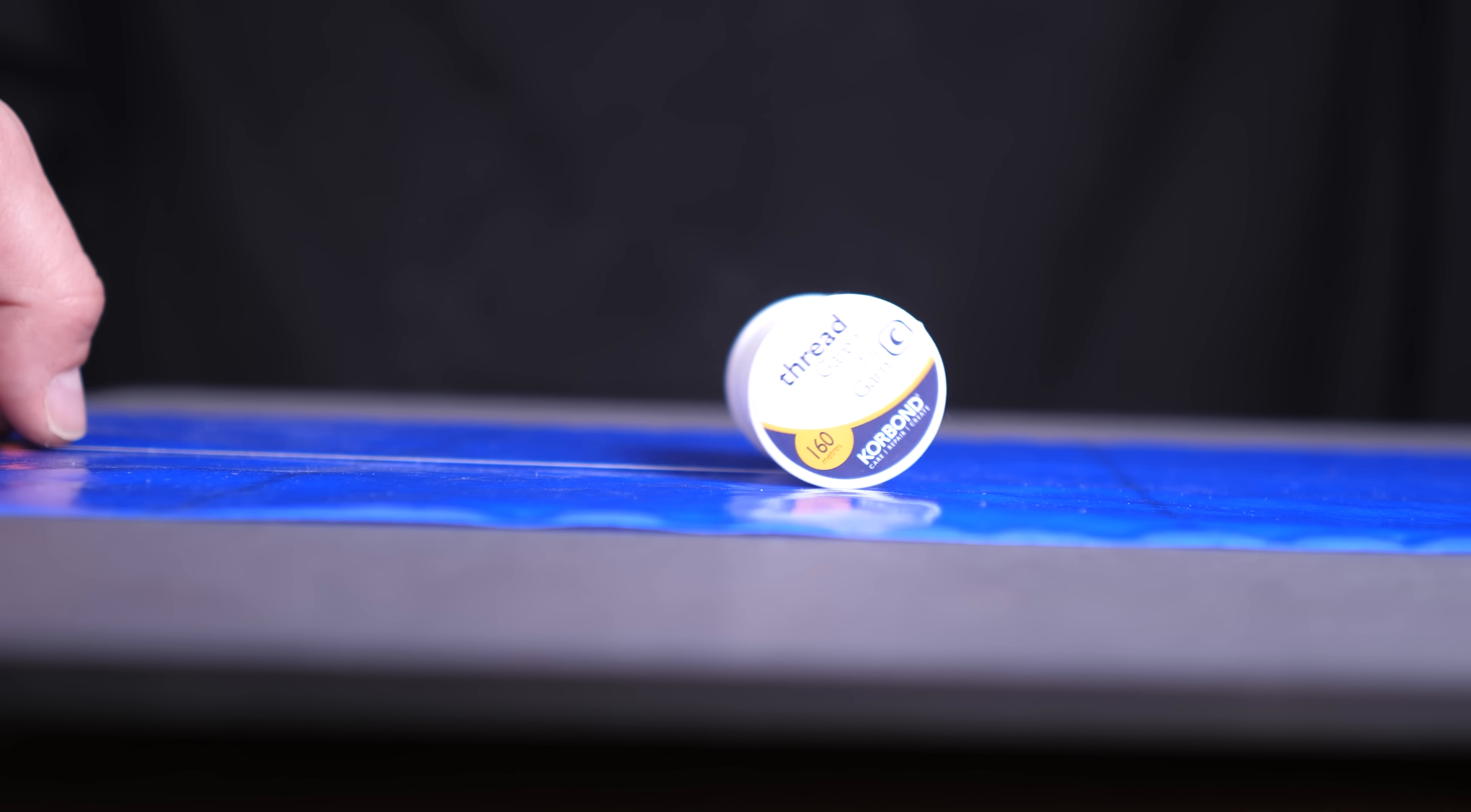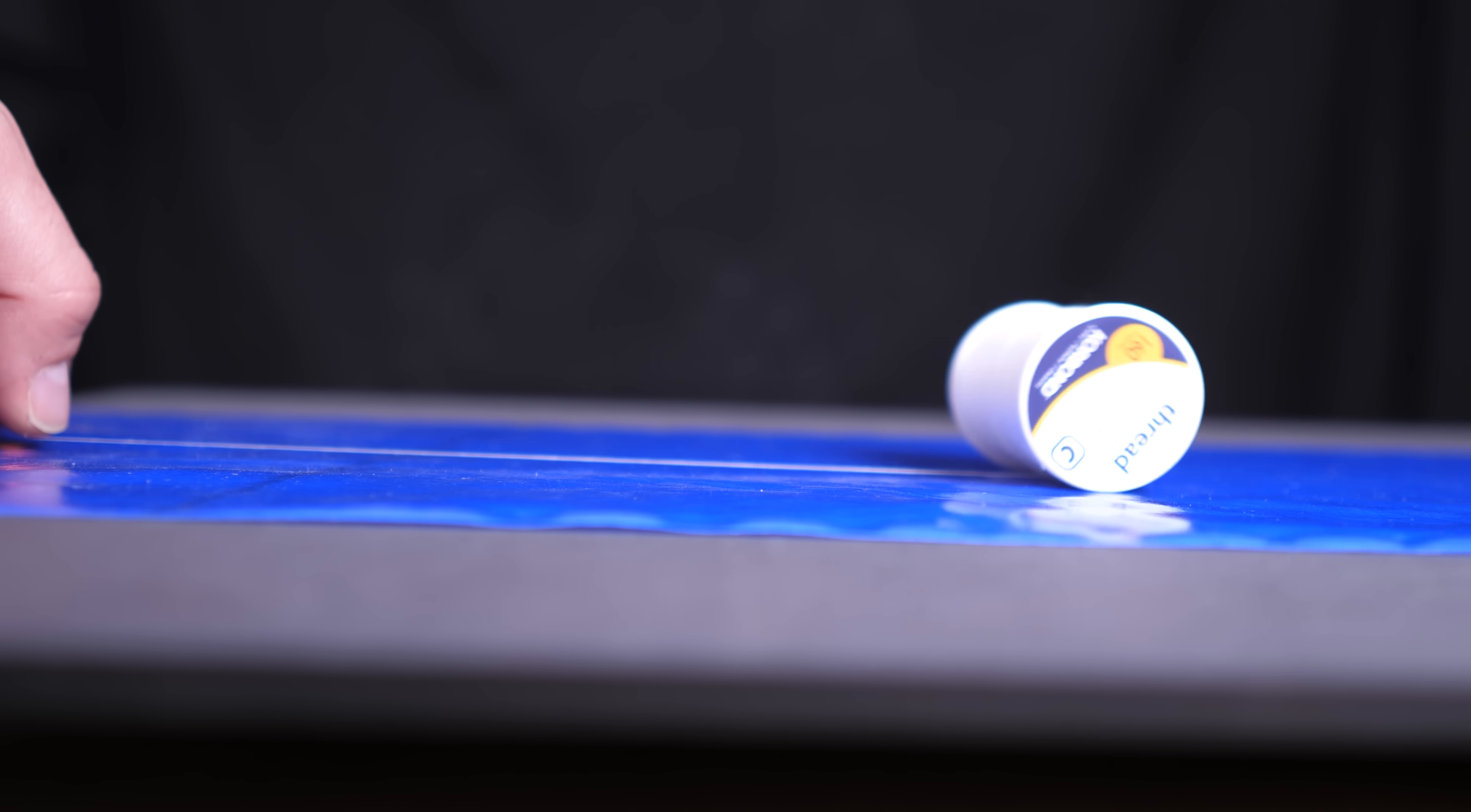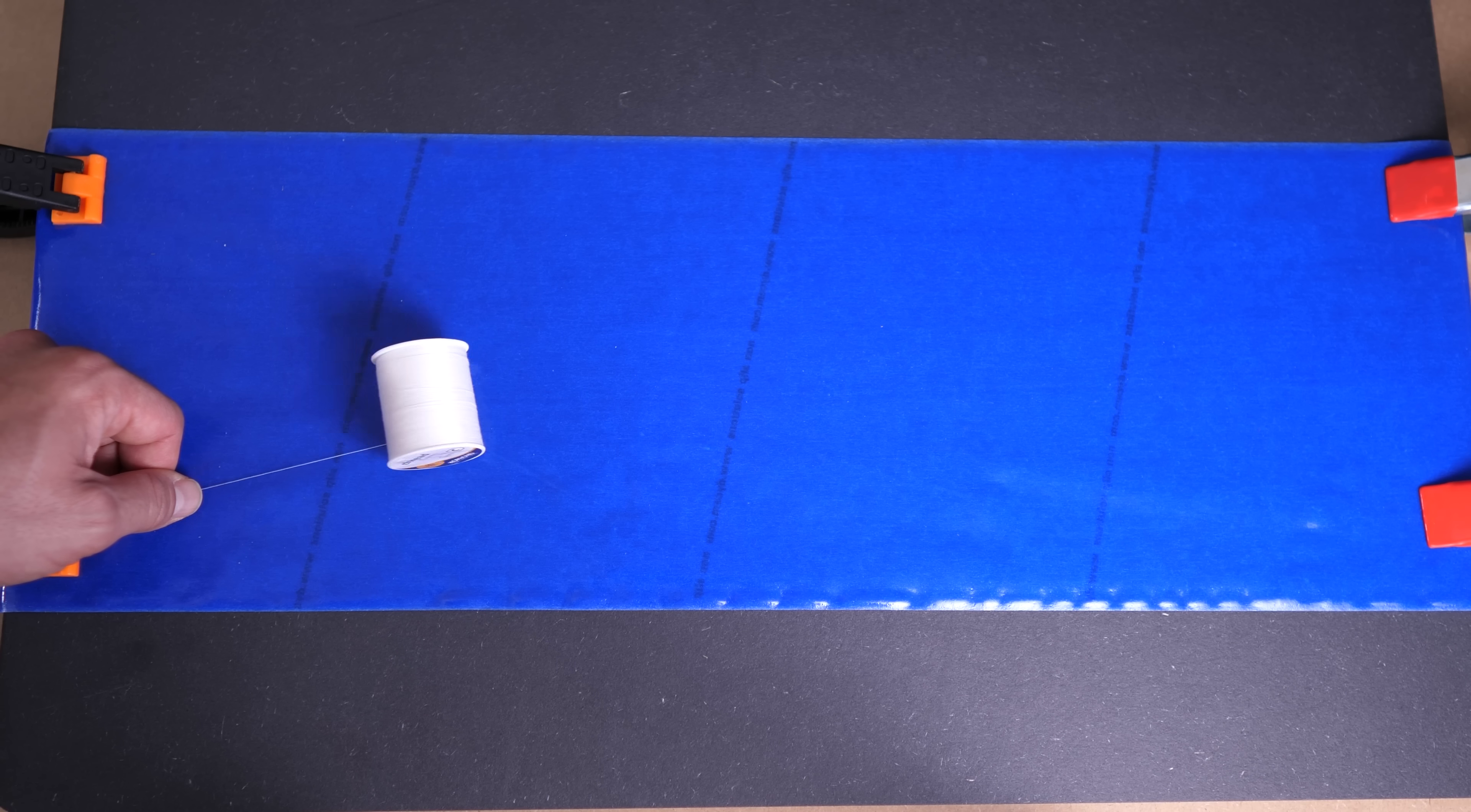When I tug the end of this thread a short distance, the spool zips towards me. And because it's on a slight incline, when I let go, it rolls away again. So just with the slightest movement, I can cause the spool to zip back and forth. How weird is that?